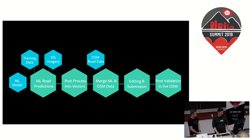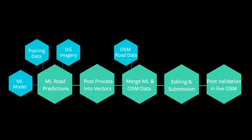The overall pipeline works like this: we have training data we've generated, satellite imagery from Digital Globe, and an ML model we've trained over time. With all these together we generate a layer of road predictions — raw pixel predictions. We run those through a bunch of heuristics and post-process them into vector data suitable for the database. Very short segments are taken out. Then we do conflation — merging what's present in OSM with what the machine has found as the road network — and supply this as a baseline for working with. That's essentially what Rapid is.